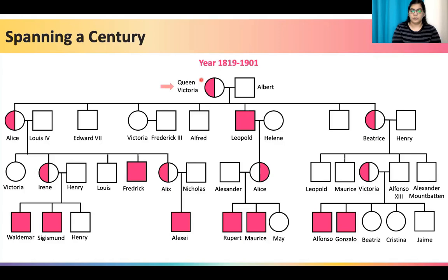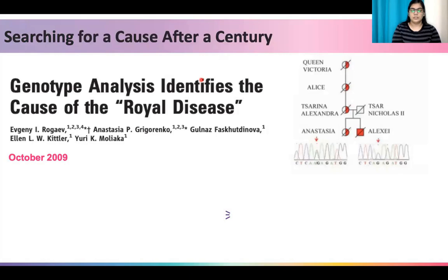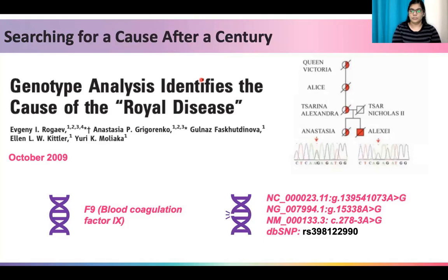It is inherited in an X-linked recessive manner, meaning that it will manifest mostly in males if they inherit the diseased copy of the X chromosome. Queen Victoria is thought to be a carrier of the disease, which she passed on to her son Leopold who died due to excessive bleeding after an accident, and also to her daughters Princess Alice and Princess Beatrice who then passed it on to their children. Most affected male members in this family died due to the disease, and the transmission line is thought to have stopped only when the remaining heirs were killed in the Russian revolution. Almost a century later in 2009, when next generation sequencing technologies came up, researchers were able to sequence the genetic material found in decaying bones of the royal family. They discovered a mutation in the F9 gene, or the blood coagulation factor 9 gene.